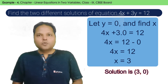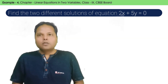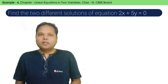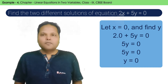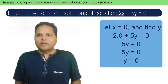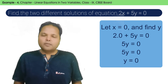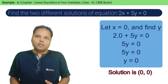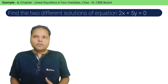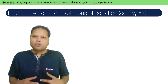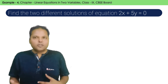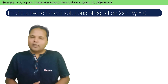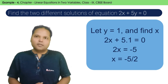This equation is 2x plus 5y is equal to 0. Again, it's very simple. Let's assume the value of x and we will calculate the value of y — that becomes the solution. Now let's take another solution: let's assume the value of y and calculate the corresponding value of x.